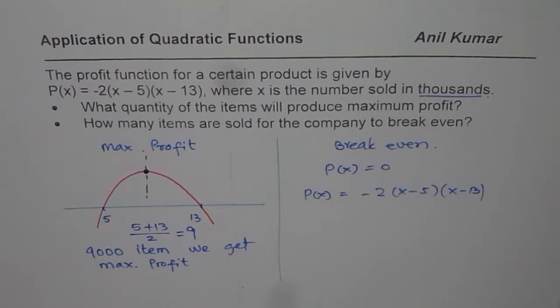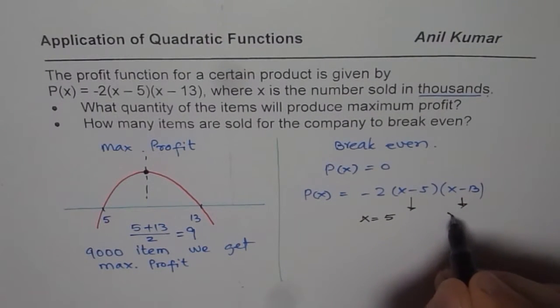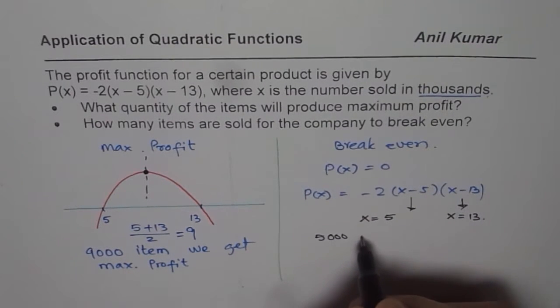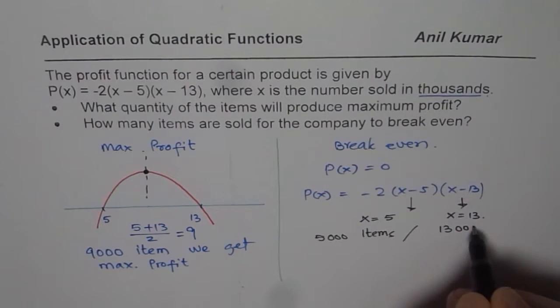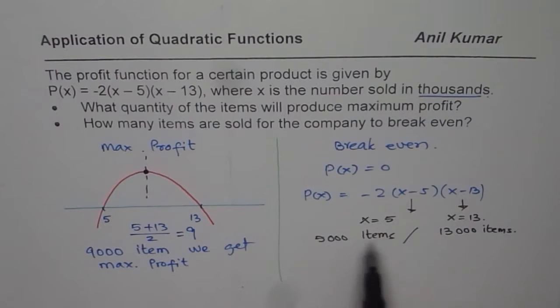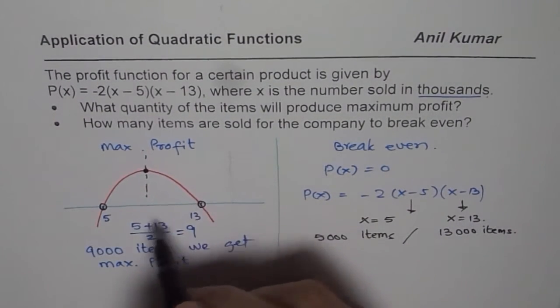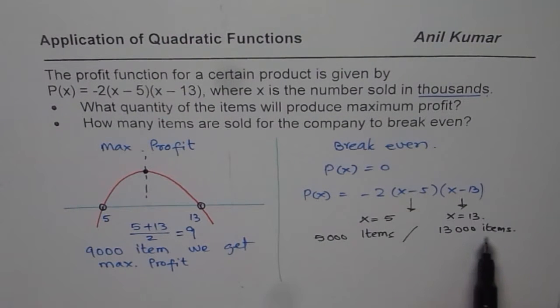When can it be 0? This is what you need to answer. So it could be 0 if x equals 5 and it could be 0 for x equals 13. That means if you sell 5,000 items or 13,000 items. You have seen that profit increases and then decreases. So if you sell 5,000 items, then the profit is 0 or you break even. You take care of your expenses at least or even when it is 13,000 items.